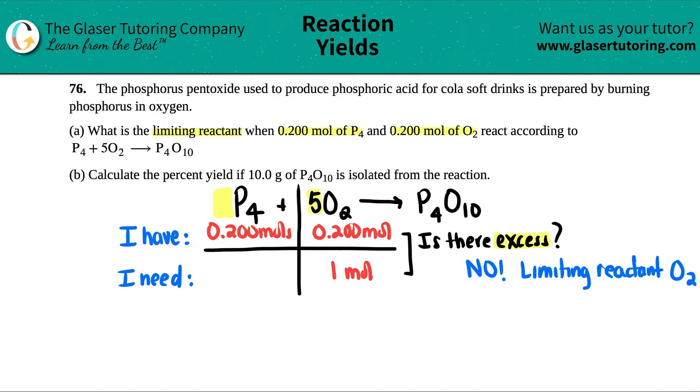But if you did have excess in which this number is smaller than what you have, then the other compound would be the limiting reactant. So the limiting reactant in this case is the O2. Okay. So we'll just put O2. So there's the first answer to letter A.